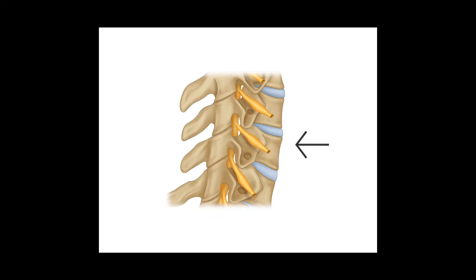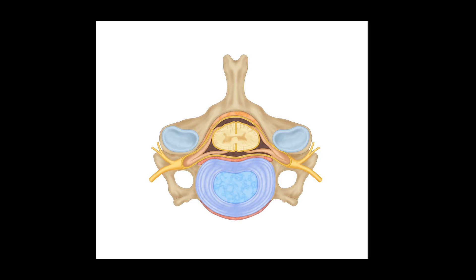Each vertebra consists of a vertebral body in the front, spinous process and lamina in the back, plus two pedicles connecting the spinous process in the front to the lamina in the back. Altogether, these bony elements form a ring. When all vertebra are stacked in alignment, they compose what is commonly referred to as the spine, and the rings form a corridor known as the spinal canal.